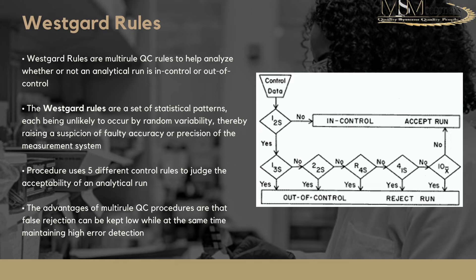If the value is outside the 2s limit, the next question is: is it outside the 3s action limit? If yes — it's outside 3s — you reject the run. That is the first Westgard rule violation. If it is outside 2s but within 3s, you then check the 2-2s rule: is there another value also in that same 2s-to-3s range? If yes, that is a 2-2s rule violation and you reject the run — you essentially have two points between two and three standard deviations.